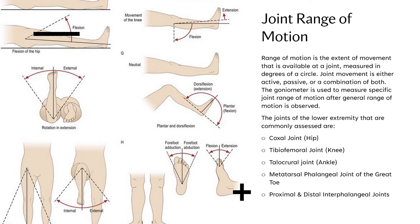Range of motion is the extent of movement available at a joint, measured in degrees of a circle. Joint movement is either active, passive, or a combination of both. The goniometer is used to measure specific joint range of motion after general range of motion is observed. The joints commonly assessed include the coxal joint (hip), the tibiofemoral joint (knee), the talocrural joint (ankle), the metatarsal phalangeal joint of the great toe, and the proximal and distal interphalangeal joints.